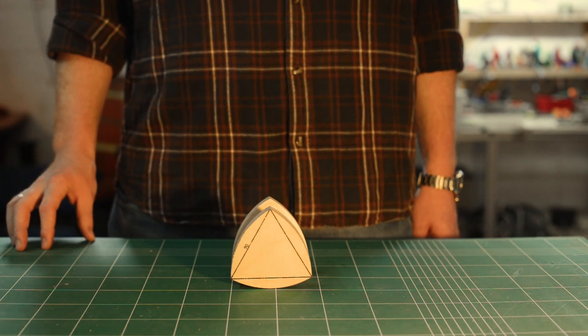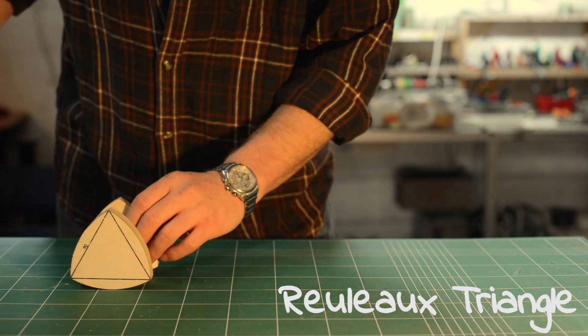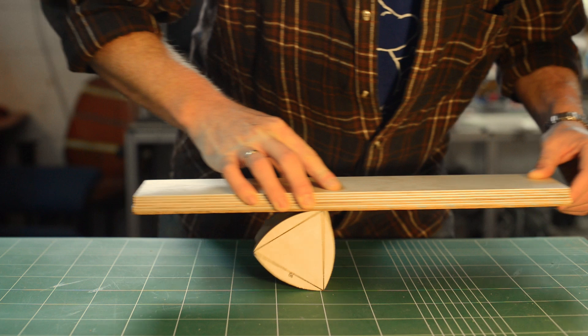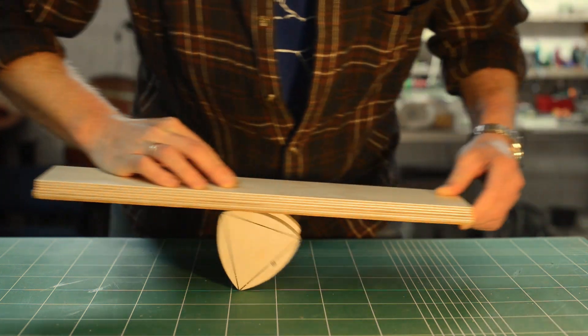This roller has a special shape, called a Reuleaux triangle, which is the simplest shape of constant width. If we want to understand why this shape behaves this way, we should first see how it's constructed.